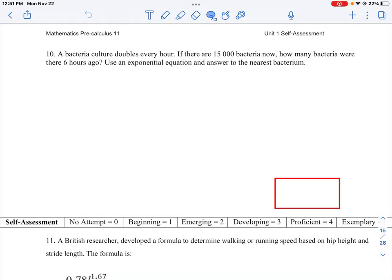Okay, so let's take a look at how we can do question number 10. We have a culture here that doubles every hour and we're told that if there are 15,000 bacteria now, we want to know how many there were six hours ago.